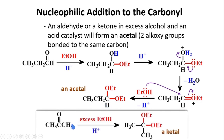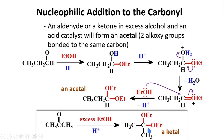If you start from a ketone such as acetone, in the presence of excess ethanol in an acid, you will form a ketal. Ketal is again similar to acetal — you have two ethoxy groups or two alkoxy groups attached to the same carbon. The use of ketal is presently discouraged by IUPAC. The new rules state that both this structure and this structure are considered acetals.